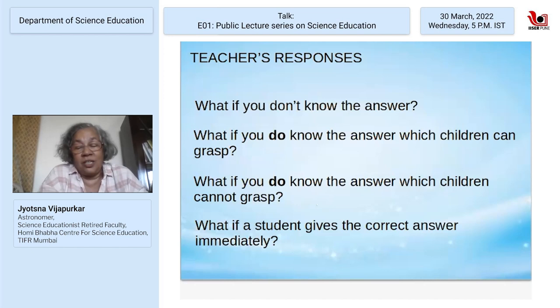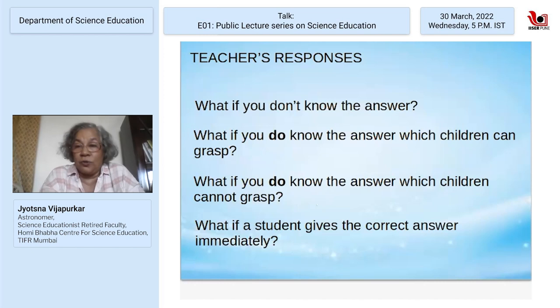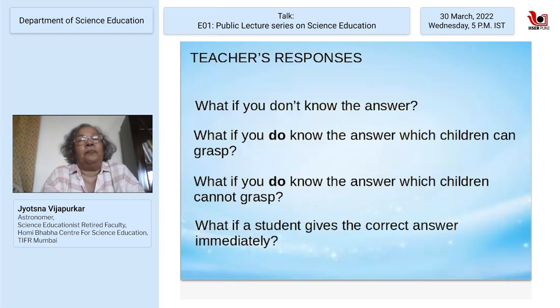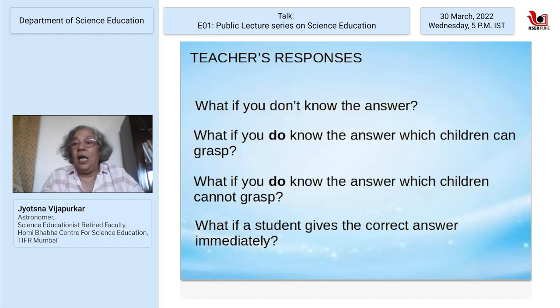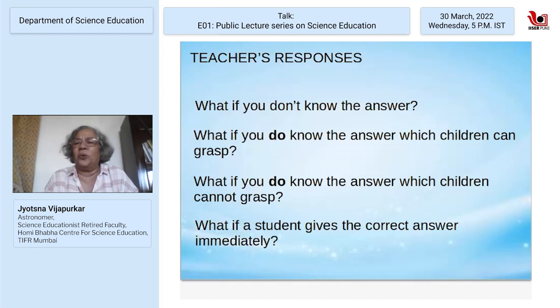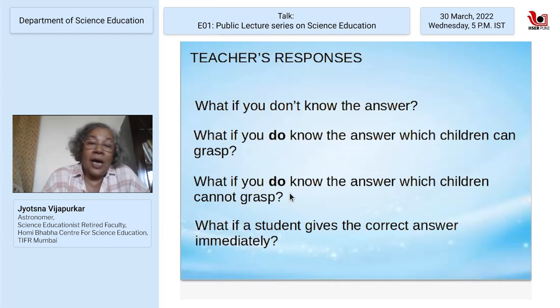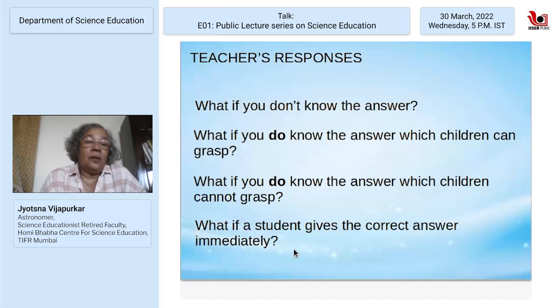In an ideal classroom, students ask questions too. What is the teacher's role when they don't know the answer? We did a study with teachers where one came and said, 'I don't know the name of this plant — doesn't matter, I want you to look at the roots.' Everyone attacked this person, saying how can a teacher say they don't know the answer? But I was thinking: that's the best thing that can happen in a science class — we don't know the answer, let's find out. What if the teacher knows the answer but children cannot grasp it? You're not going to teach Maxwell's equations to a five-year-old who asks why the sky is red at sunset.